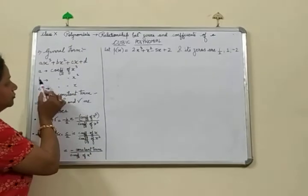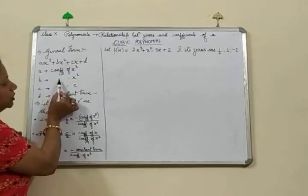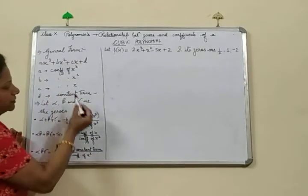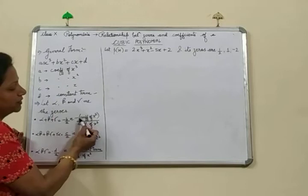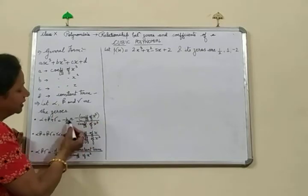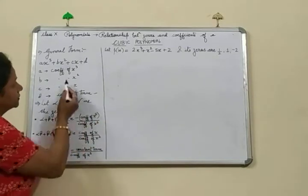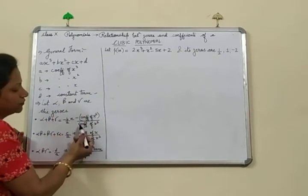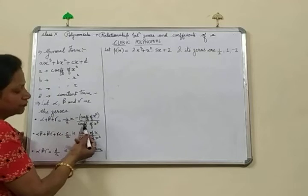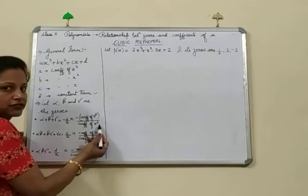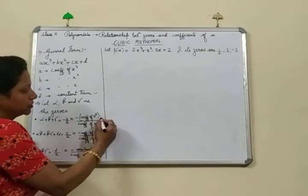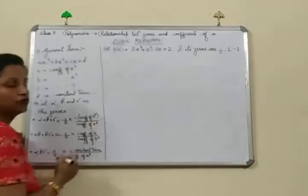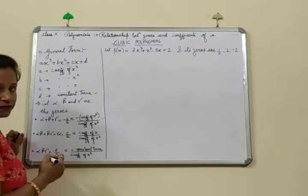What is b? From here, b is the coefficient of x square. So we can write it as minus coefficient of x square. And a is the coefficient of x cube. So we can write a as coefficient of x cube. So this is the sum of the zeros.